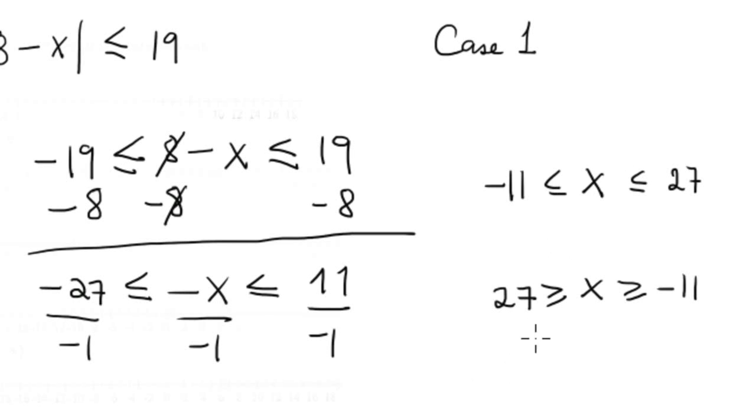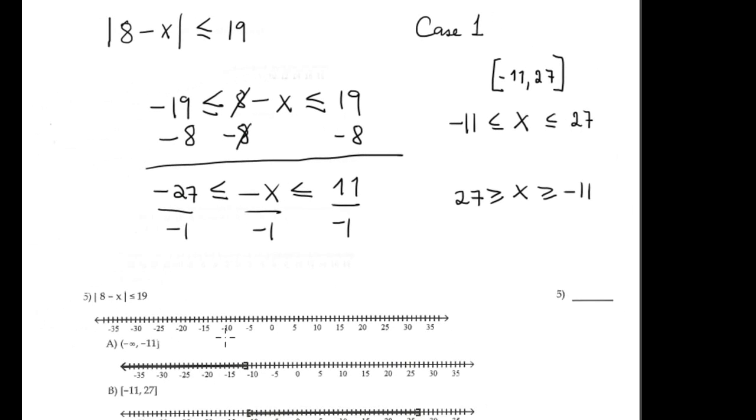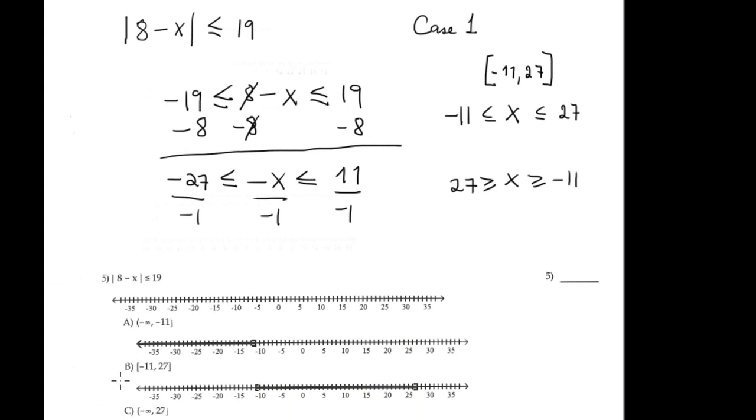The equal word is like a bracket: negative 11, comma 27, bracket. Include both because I have equal signs on both sides, and this corresponds with option B.